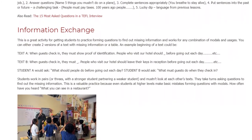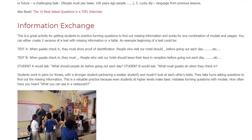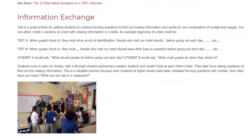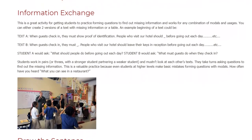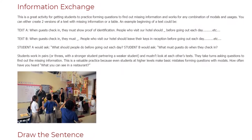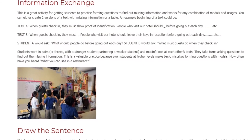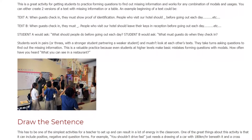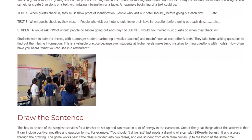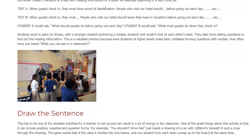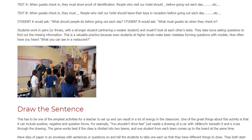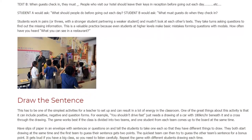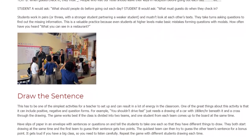Information Exchange: This is a great activity for getting students to practice forming questions to find out missing information, and works for any combination of modals and usages. You can either create two versions of a text with missing information or a table. An example: Text A — 'When guests check in, they must show proof of identification. People who visit our hotel should ___ before going out each day...' Text B — 'When guests check in, they must ___. People who visit our hotel should leave their keys in reception before going out each day...'